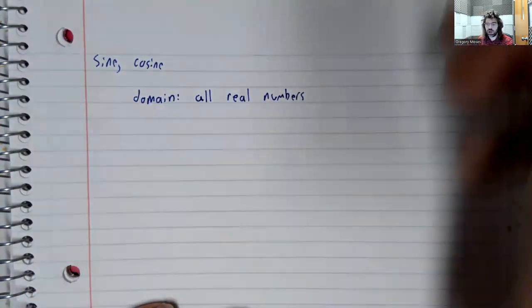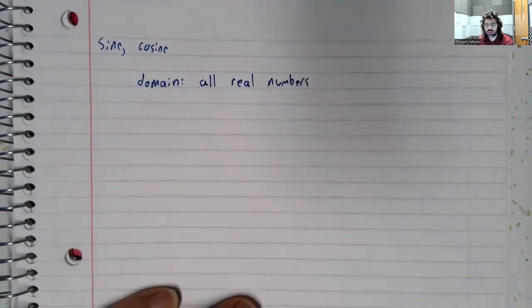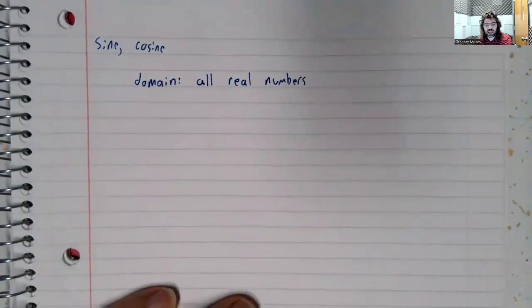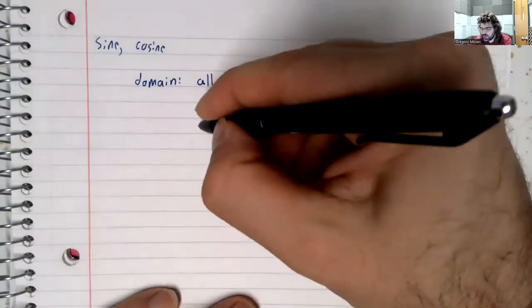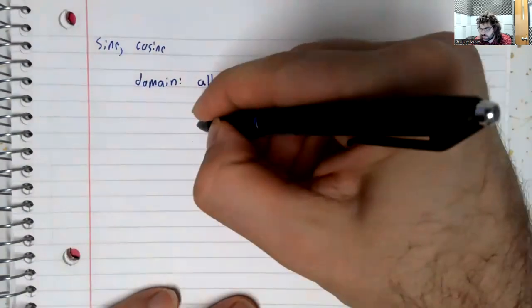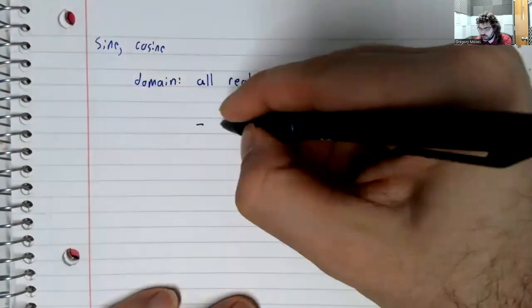All the real numbers. Let's say we want to take the sine or the cosine of negative 724.